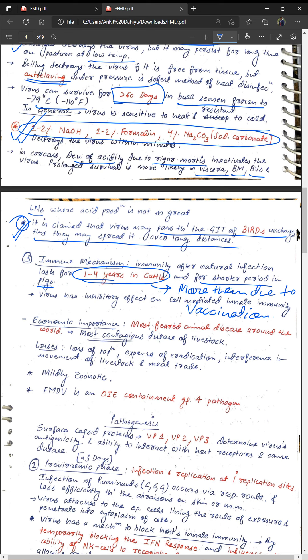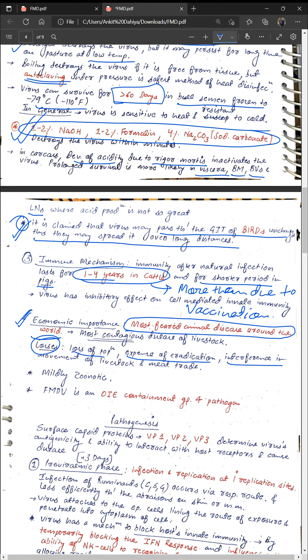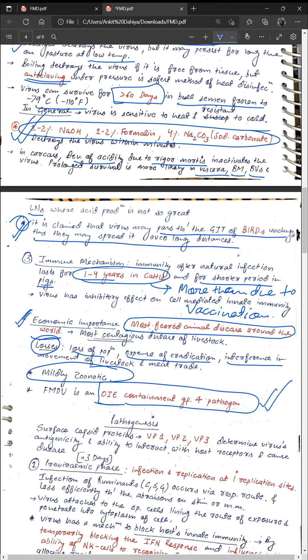FMD is one of the most feared diseases of animals globally because it is highly contagious and can spread up to 250 kilometers via aerosol. Economic losses include loss of animals, expense of eradication, and interference in trade and livestock movement. It is mildly zoonotic and has been categorized as an OIE containment group 4 pathogen — remember this for competitive examinations.